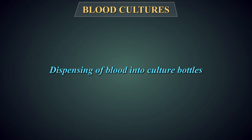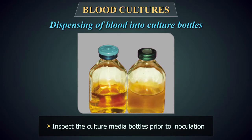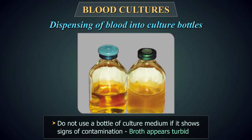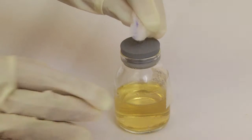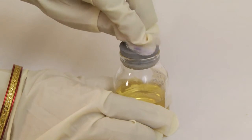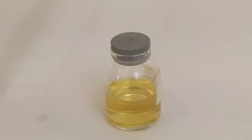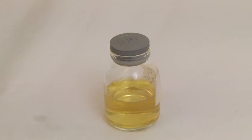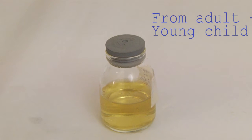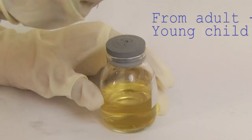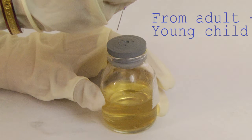Dispensing of Blood into Culture Bottles: Inspect the culture media bottles prior to inoculation. Do not use a bottle of culture medium if it shows signs of contamination, i.e., the broth appears turbid. Wipe the top of the bottle using an ethanol ether swab. Using a sterile syringe and needle, withdraw about 20 ml of blood from an adult or about 5 ml from a young child.